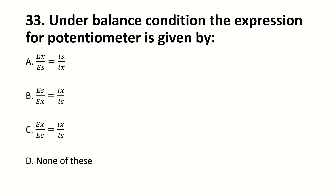At the balance condition, the expression for the potentiometer is given by — blank. Right answer is C: EX divided by ES equals LX divided by LS. You can confirm that this is the option here.